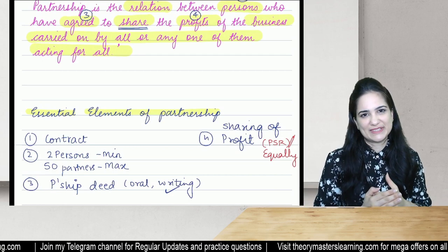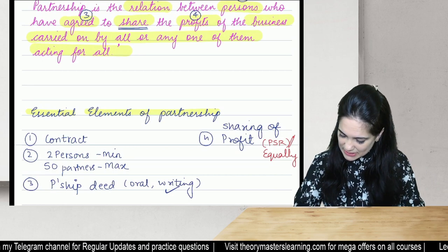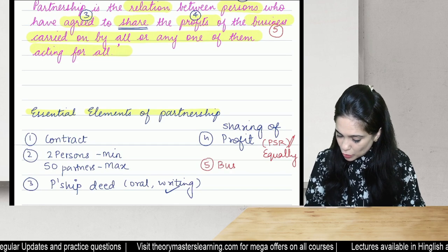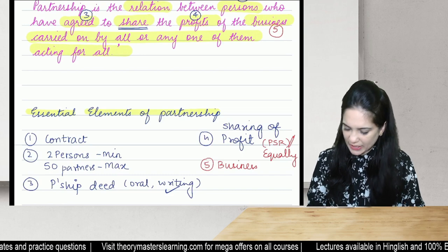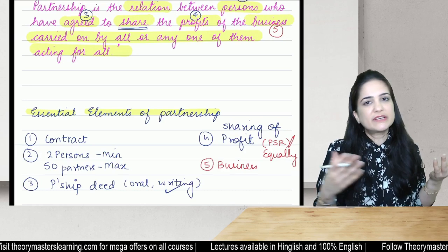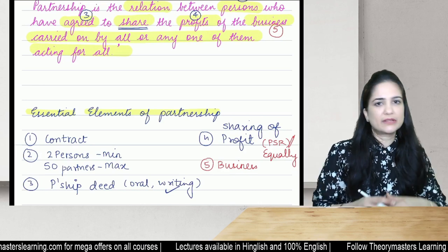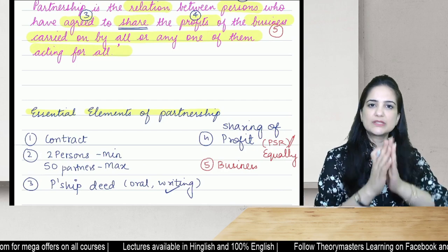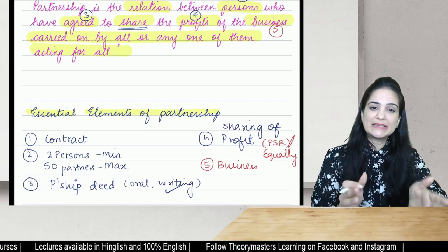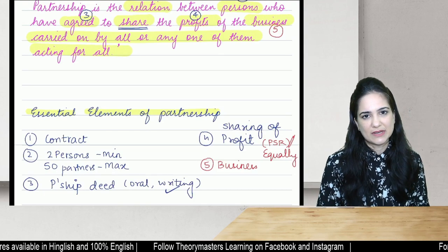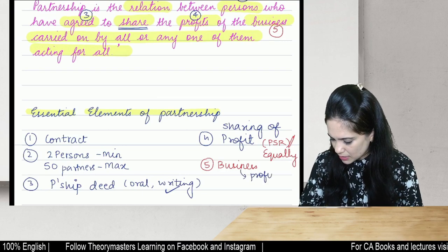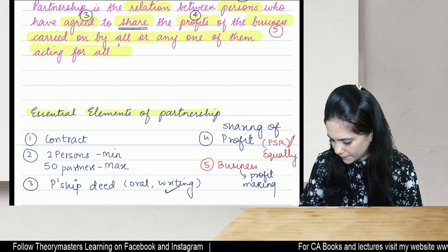There must be business — this is another element of a valid contract of partnership. No business, no partnership. Only if there is business will we earn profit and ultimately share that profit. There has to be a lawfully run, profit-making business.